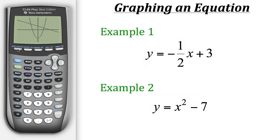So to do that we could go back to y equals. And if you notice with our y1 and y2 we have black boxes around the equals signs. Now that means that these equations are turned on. So they'll show up when we go to the graph.